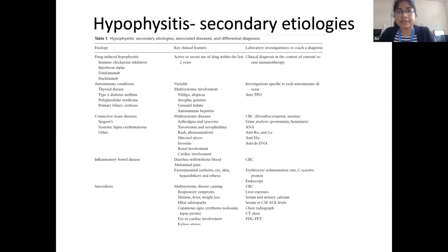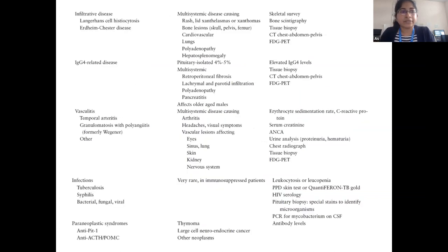This chart illustrates the common secondary etiologies. In recent years, we have encountered patients with immune checkpoint inhibitor-induced hypophysitis, as well as autoimmune conditions, connective tissue disorders, inflammatory bowel disease, sarcoidosis, and other infiltrative diseases like Langerhans cell histiocytosis, IgG4-related disease, vasculitis, infection, and paraneoplastic syndromes as secondary causes.